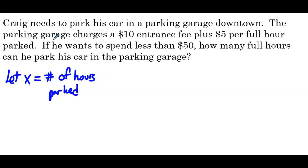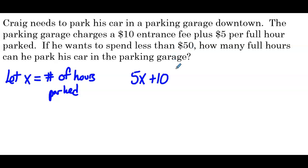Now, the way that we're going to figure out how much this parking garage is charging: they charge a $10 entrance fee, so that's a fixed value — that's a y-intercept — and $5 per full hour, so that's a rate, that's going to be a slope. So they're going to charge 5x plus $10. That's our expression to figure out how much the parking garage charges, and Craig wants that to be less than 50.